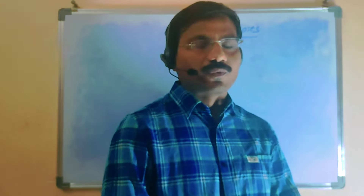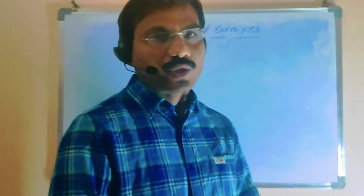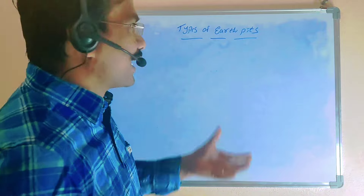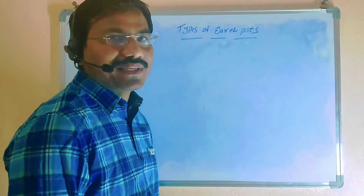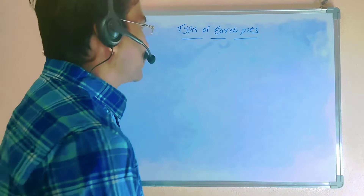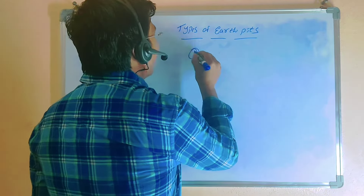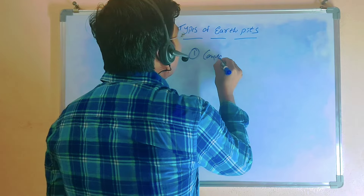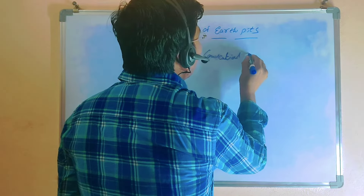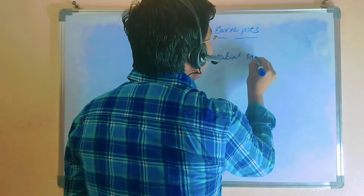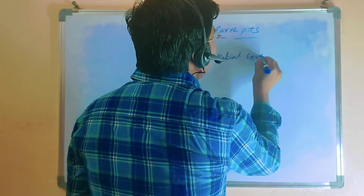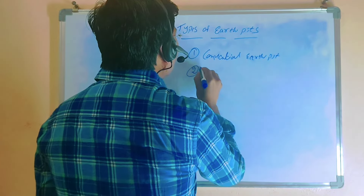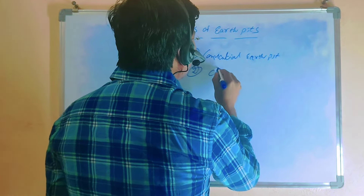Today we are discussing one more concept: what are the types of earth pits? The earth pits may be classified into two types. The first one is called conventional earth pits, and the second one is called chemical earth pits.